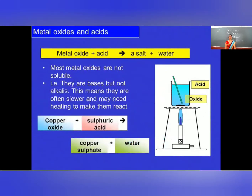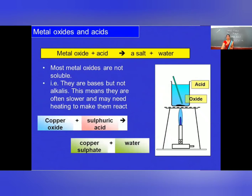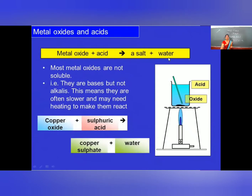Second chemical property of acid: reaction of acid with metal oxide. Metal oxides are basic in nature, which means they form hydroxides — they are nothing but bases. Base reacts with acid to form salt and water, which is a neutralization reaction. Most metal oxides are not soluble, so to make them soluble we provide a little heat using a burner. For example, copper oxide (CuO) when reacts with sulfuric acid gives copper sulfate and water as a byproduct. This is the same as a neutralization reaction because metal oxide is basic in nature.